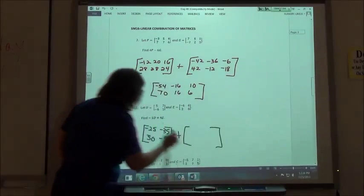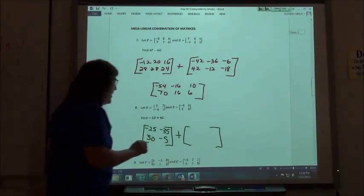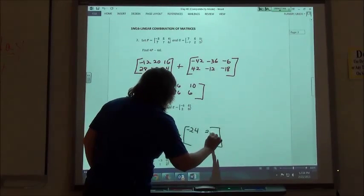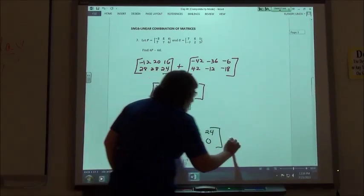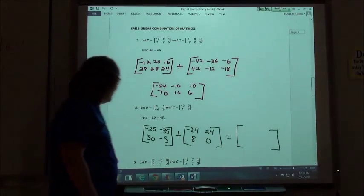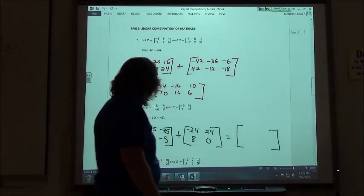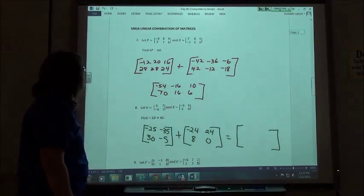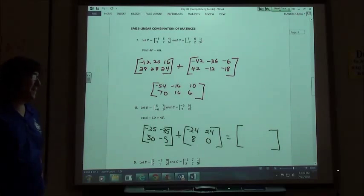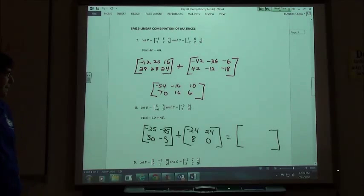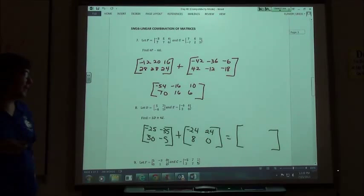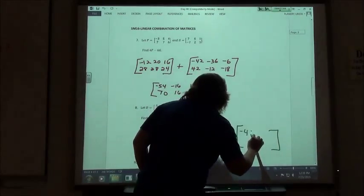So we would get, and we are going to take E times 4, so we would get 24, 8, 0. And then we're going to add those two matrices together, so our answer is going to be.